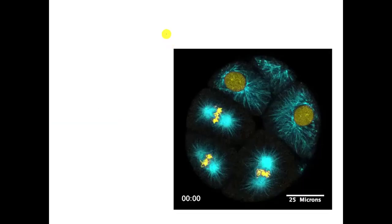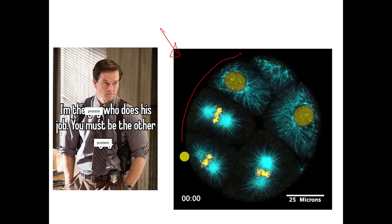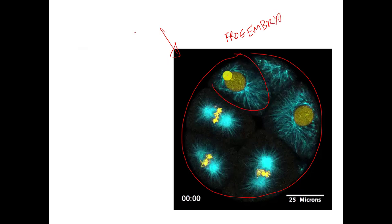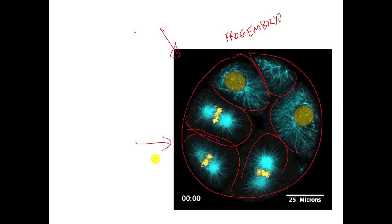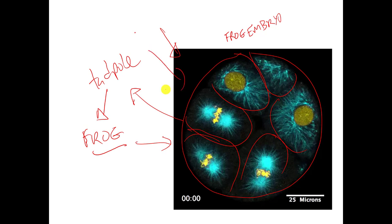On this slide, I'm going to show you an example of one specific type of protein molecule doing its job. This picture here is a frog embryo. Each of these things I'm circling are cells inside the frog embryo — this is very early on. If this got enough food and the cells divided enough, it would eventually turn into a tadpole, then a frog. Right now it's just basically a blob of cells. This yellow stuff is the DNA inside each of the cells — so this is froggy DNA.